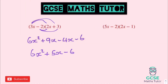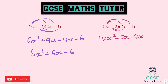And on to the last one. 5x times 2x is 10x squared. 5x times negative 1 is negative 5x. Negative 2 times 2x is negative 4x. And negative 2 times negative 1 is positive 2. Tidying that up: negative 5 take away 4 is negative 9, so negative 9x plus 2.